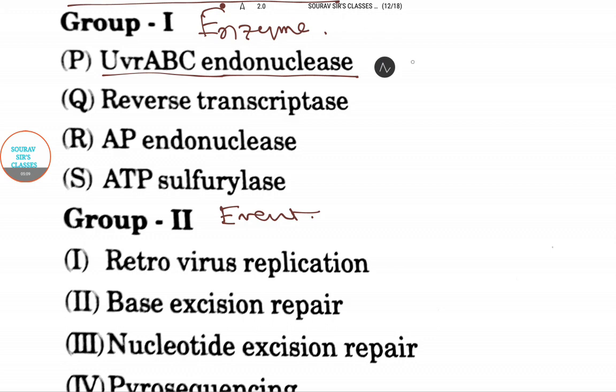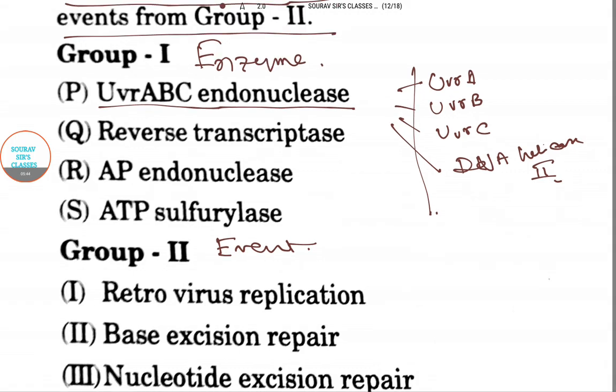For UvrABC endonucleases, they are of four types: UvrA, UvrB, UvrC, and another one is DNA helicase 2.